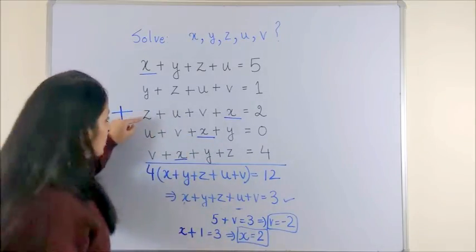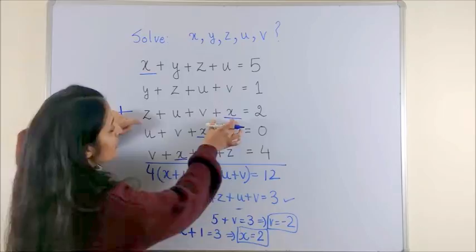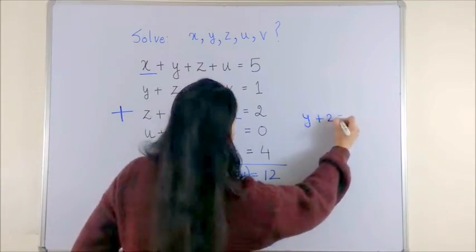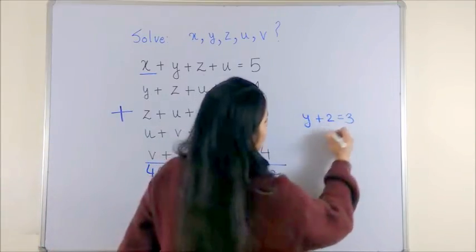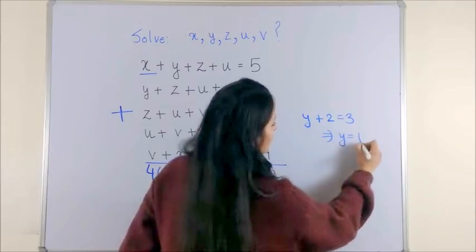Similarly, from the third one, y is not available with us. So, we get y plus 2 is equal to 3. That gives us y is equal to 1.